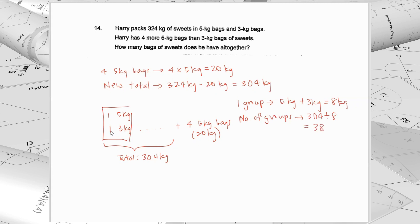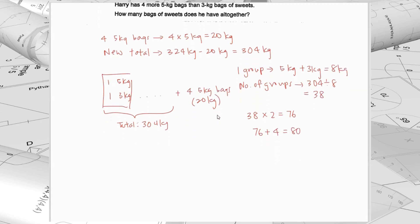So how many bags of sweets does he have altogether? 38 groups. If every group has 2 bags, then 38 groups means that I'll take 38 times 2 for the total number of bags in 38 groups. Then remember, we have this extra 4 bags. You need to add them back to get the answer, the number of bags of sweets in total.